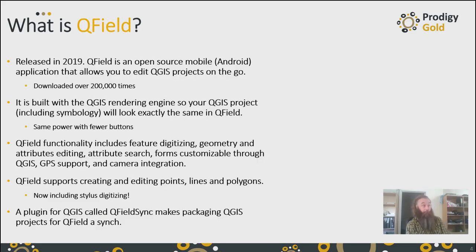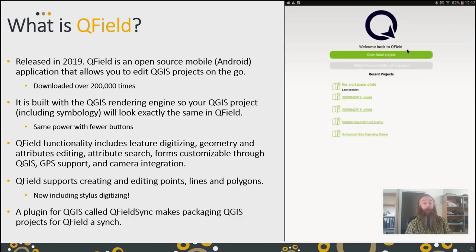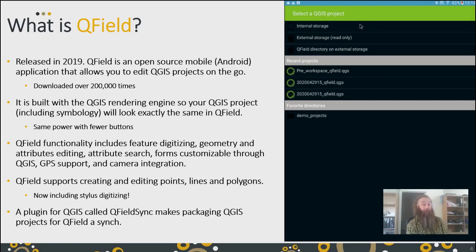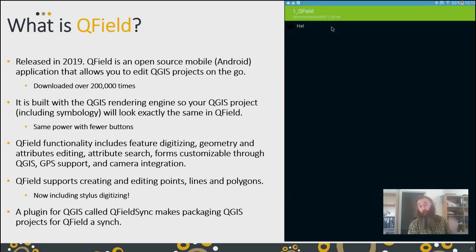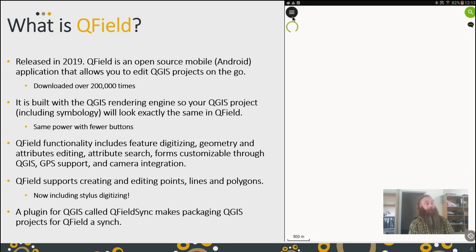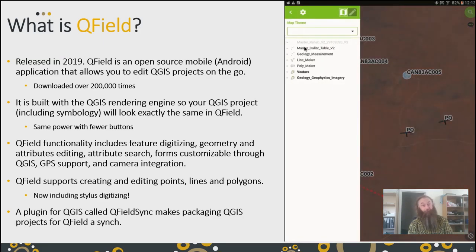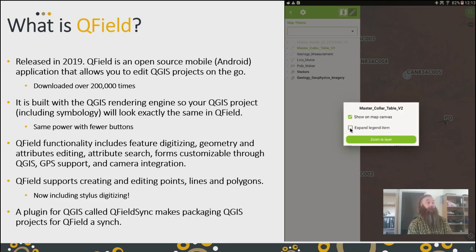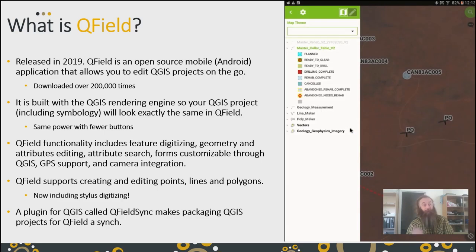So what is Qfield? Many of you probably already know — it was released in 2019 and has already got over 200,000 downloads. It's built on the exact same engine as QGIS, so whatever your project looks like in QGIS should look the same in Qfield. As long as you can make the symbologies pretty, Qfield can make a pretty map right back at you. Its functionality is really good for us in the field. It lets us digitize with customizable camera integration as well as stylus availability. You can track where you go, it talks to your GPS and the other sensors in your tablet. So it's basically a spatial data collection super center for us.